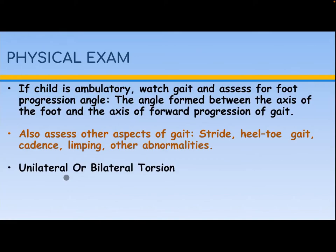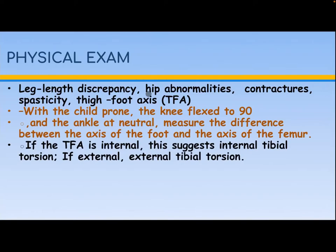Also assess leg length discrepancy, hip abnormality, contractures, spasticity, and the thigh foot axis. With the child prone, the knee flexed 90 degrees, and the ankle at neutral, measure the difference between the axis of the foot and the axis of the femur. If the thigh foot axis is internal, this suggests internal tibial torsion; if external, it suggests external tibial torsion.